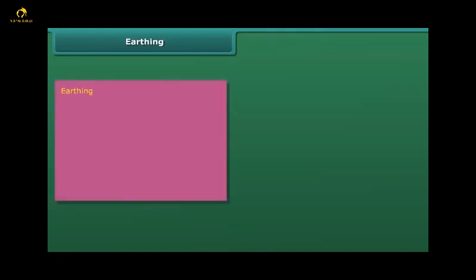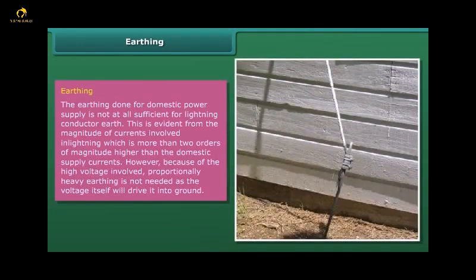The earthing: The earthing done for domestic power supply is not at all sufficient for lightning conductor earth. This is evident from the magnitude of currents involved in lightning, which is more than two orders of magnitude higher than the domestic supply currents. However, because of the high voltage involved, proportionally heavy earthing is not needed as the voltage itself will drive it into ground.